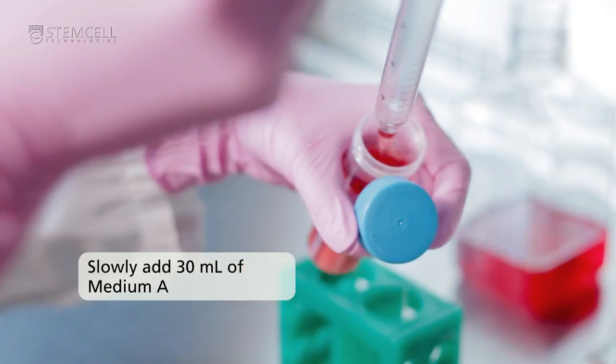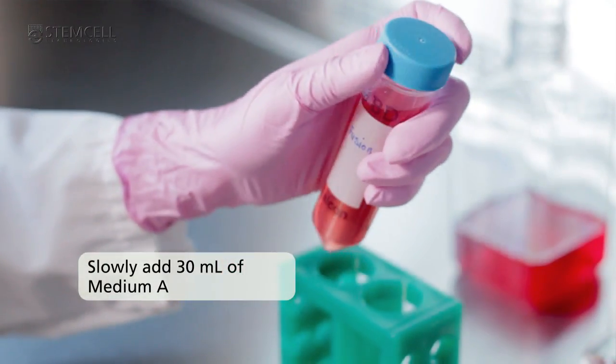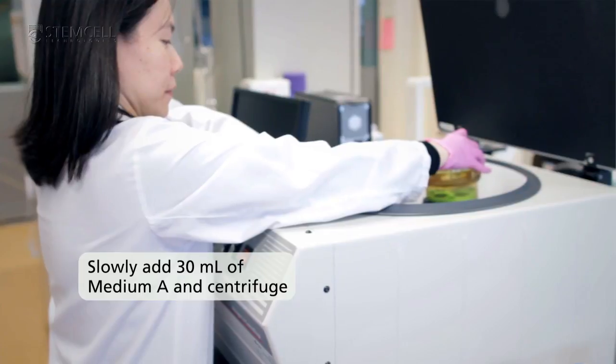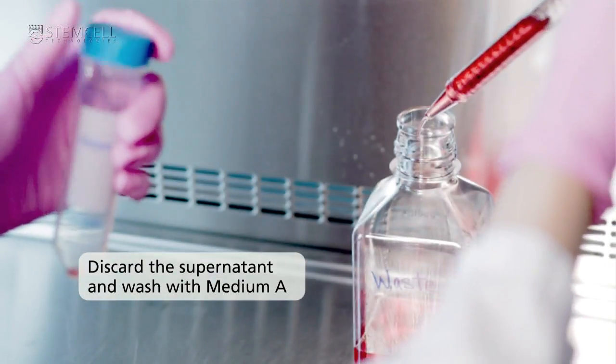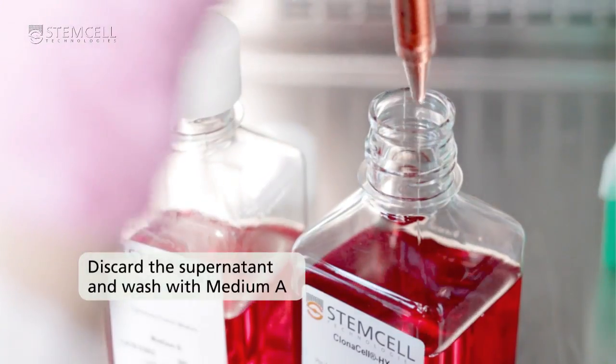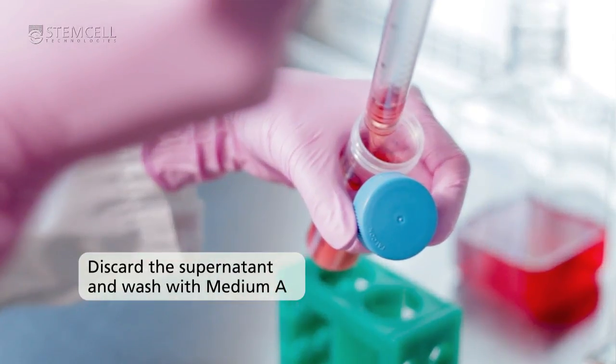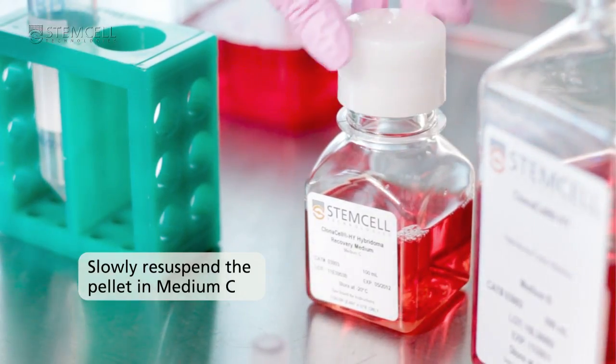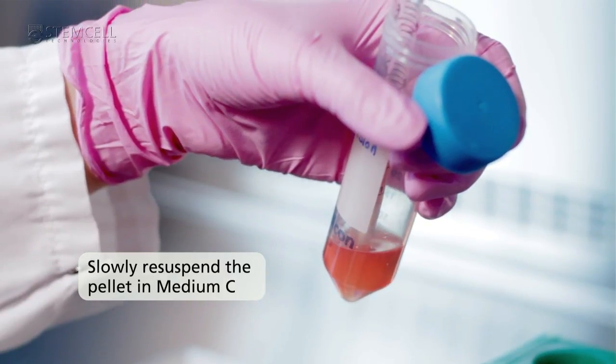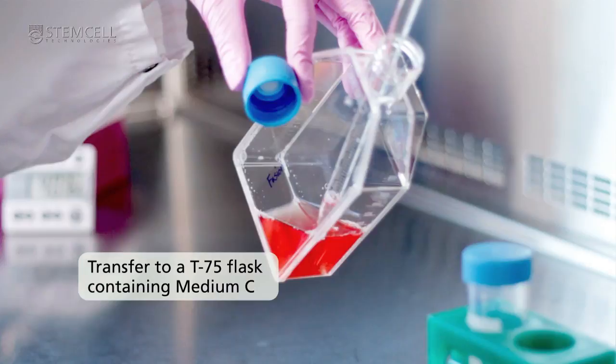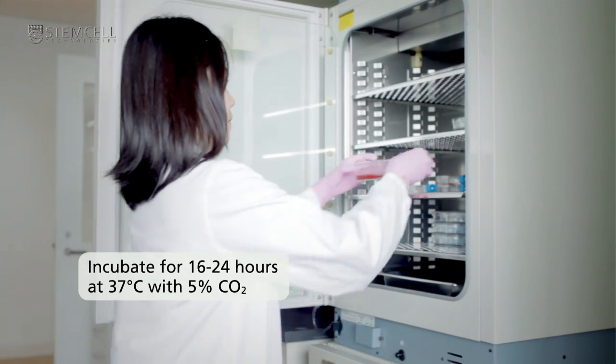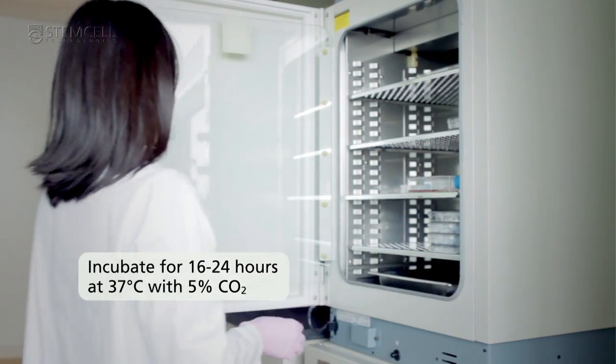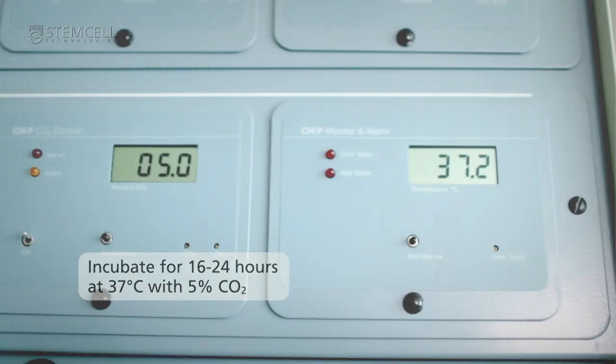Slowly add 30 mils of medium A and centrifuge. Discard the supernatant and wash with medium A to ensure that all the PEG is removed. Slowly resuspend the pellet in medium C. Transfer to a T75 flask containing medium C. Incubate for 16 to 24 hours at 37 degrees Celsius with 5% CO2.